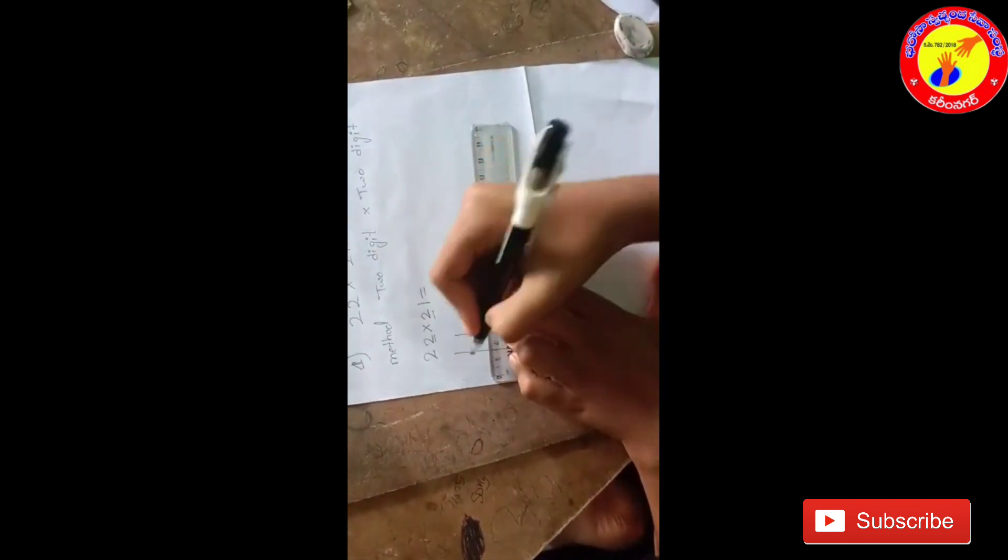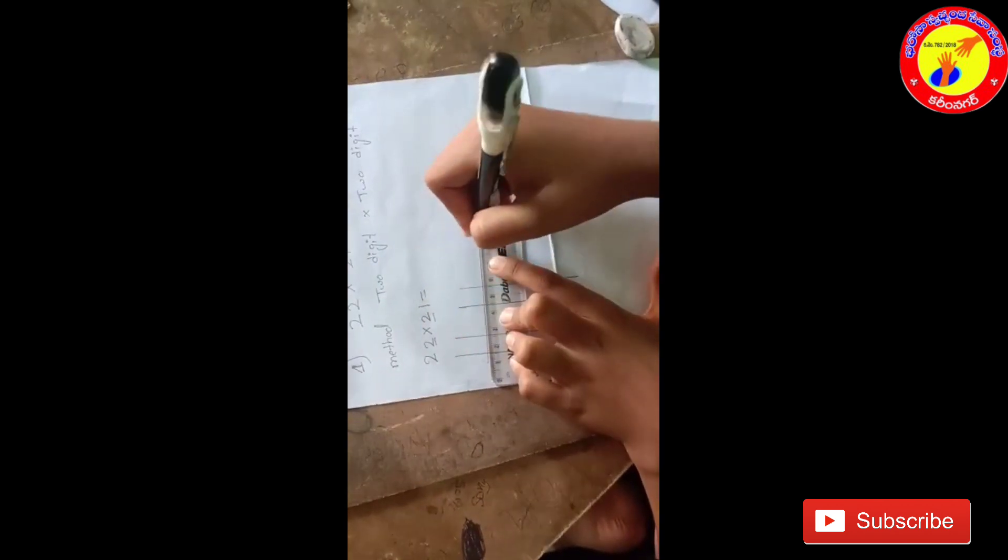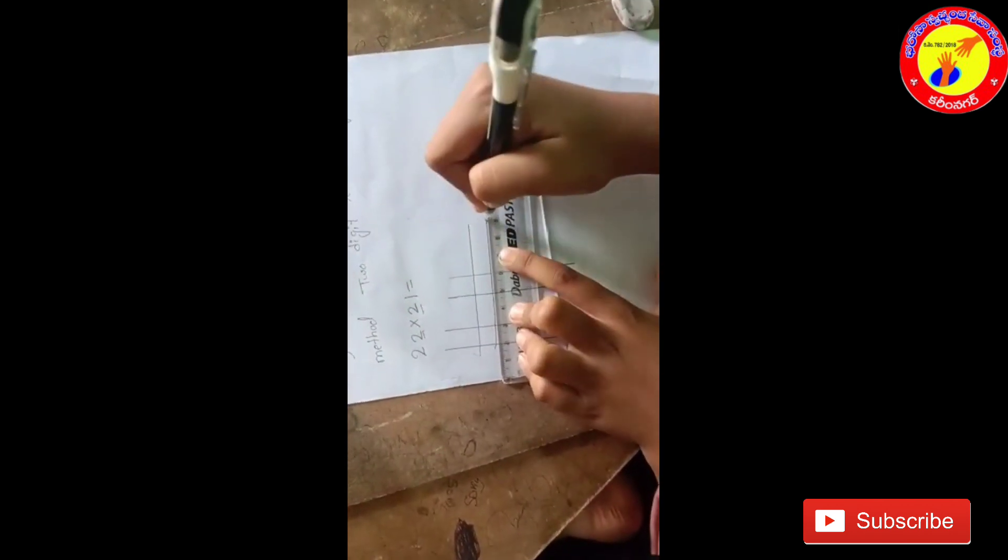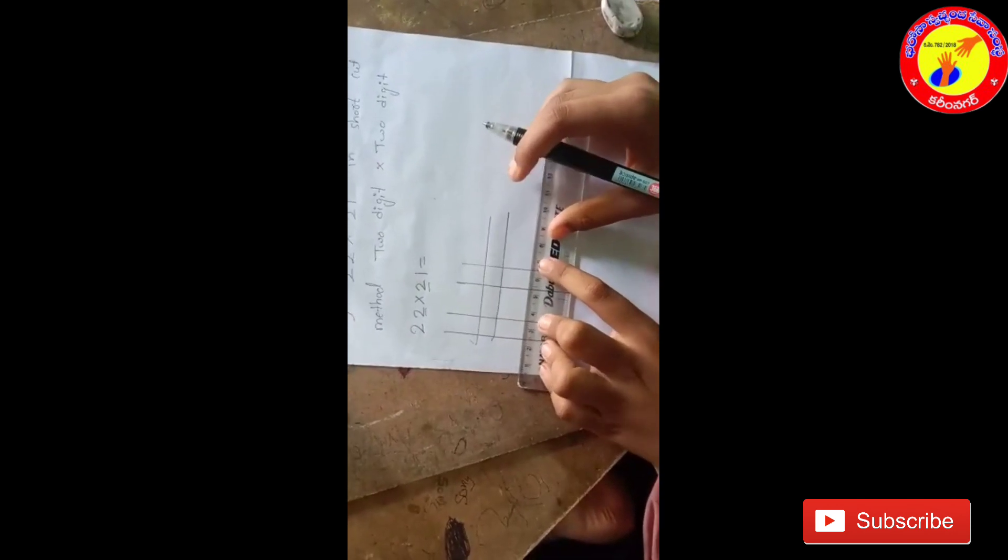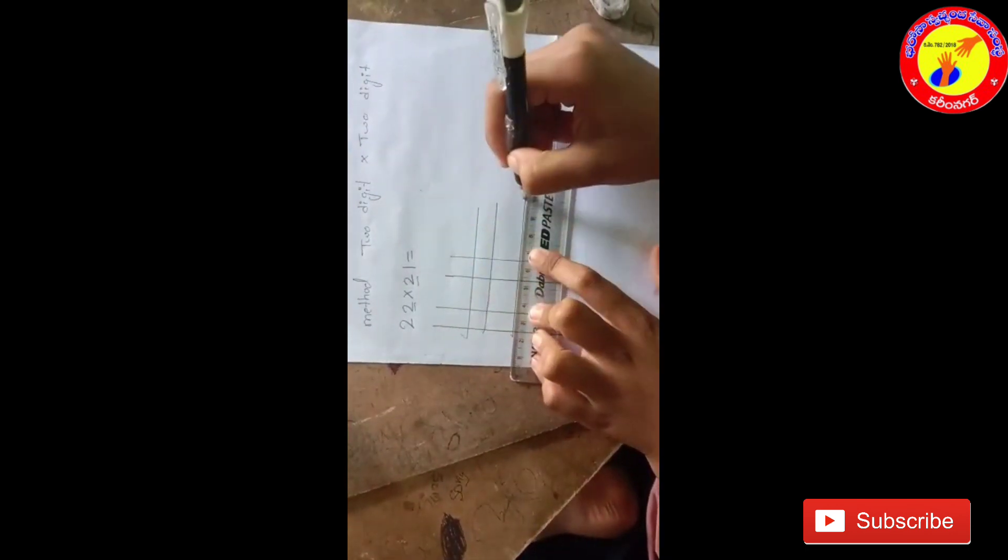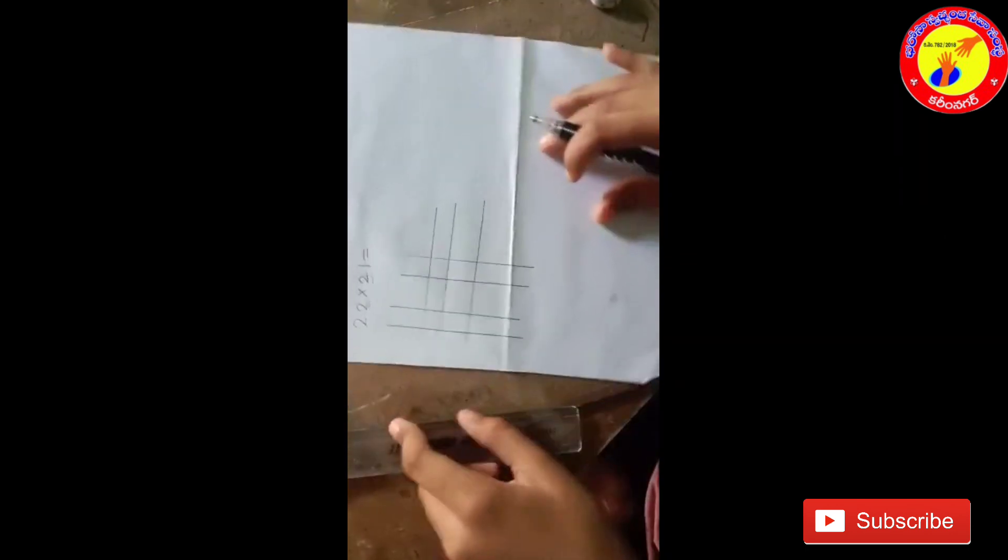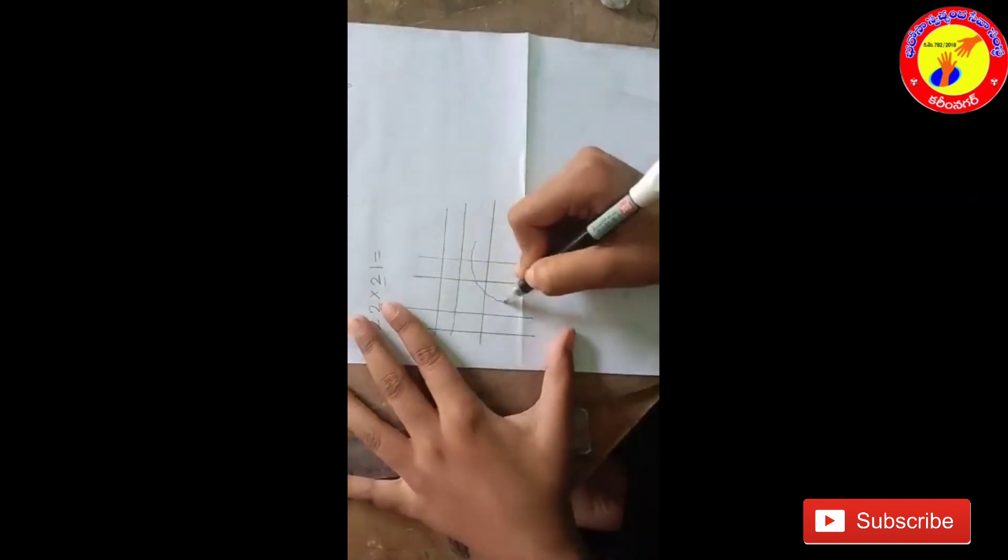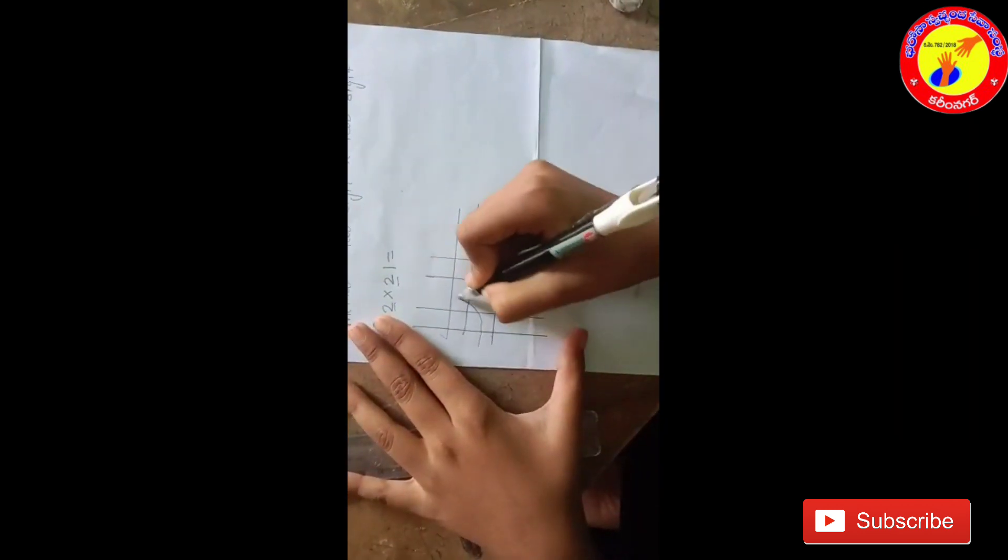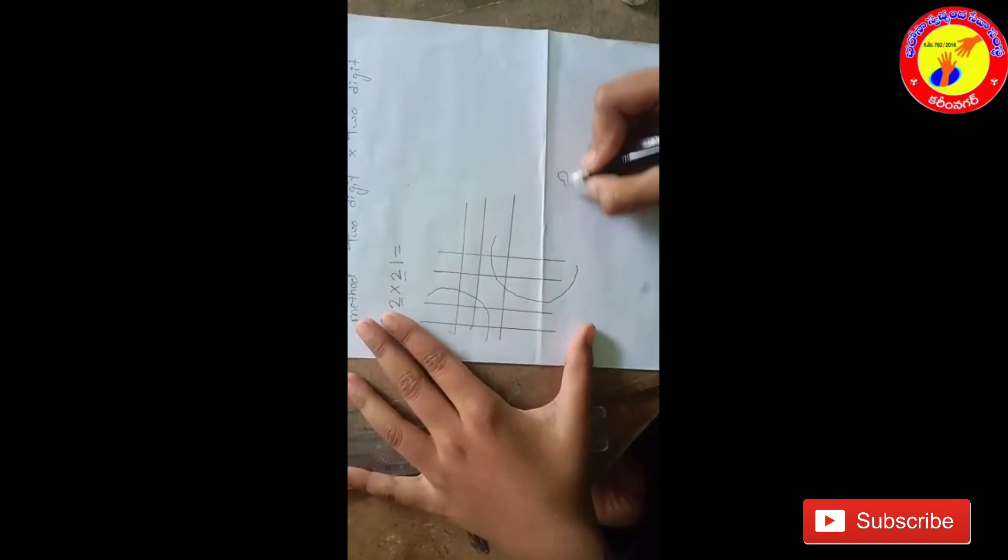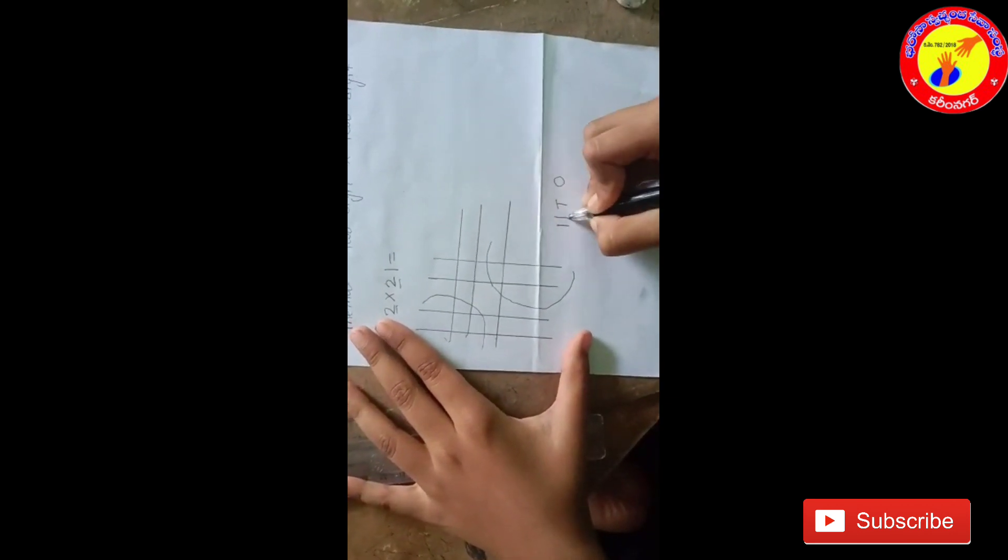Next, 2 horizontal lines and 1 horizontal line. Give the gap and 1 horizontal line. Now label them: ones, tens, hundreds.